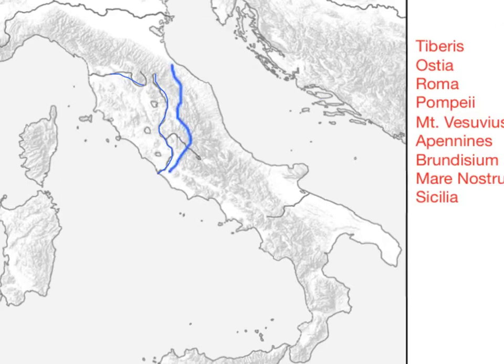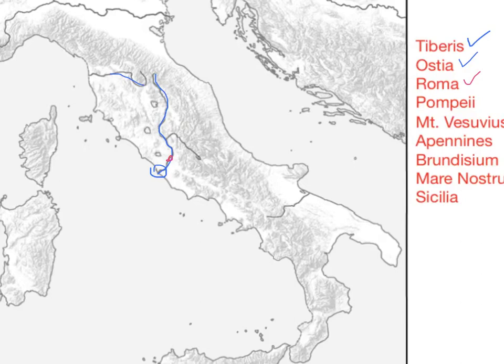Ostia — so we can cross that off our list. The next item on our list is Ostia, which is the name of the port at the mouth of the Tiber River. Ostia is the mouth of the Tiber. Rome, of course, is the city located right on the Tiber.